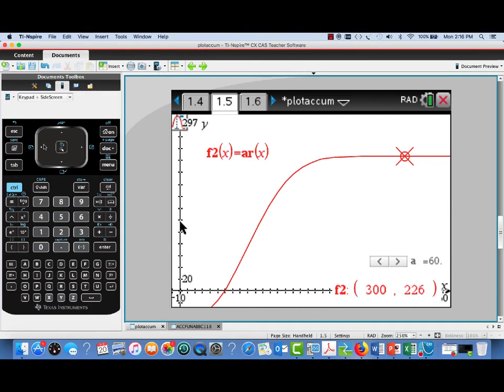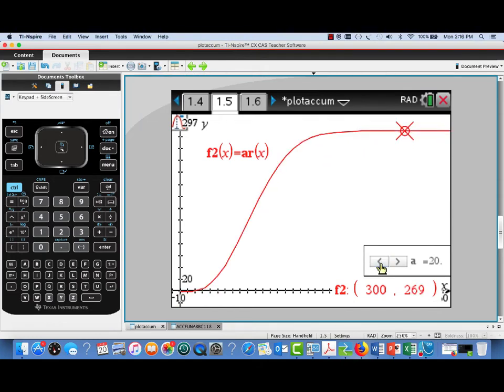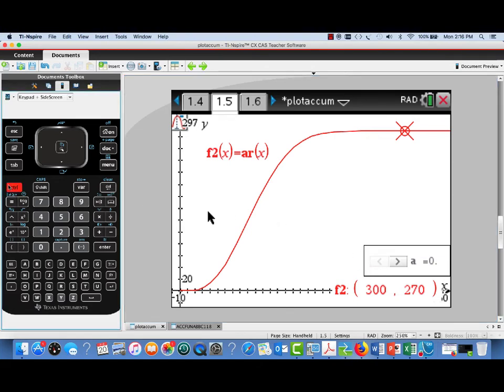To answer this question, the first thing I'm going to want to do is to restore my accumulation function to its original lower limit of integration, A equals 0. So I've decreased the parameter A back to 0. So we have our original accumulation function.